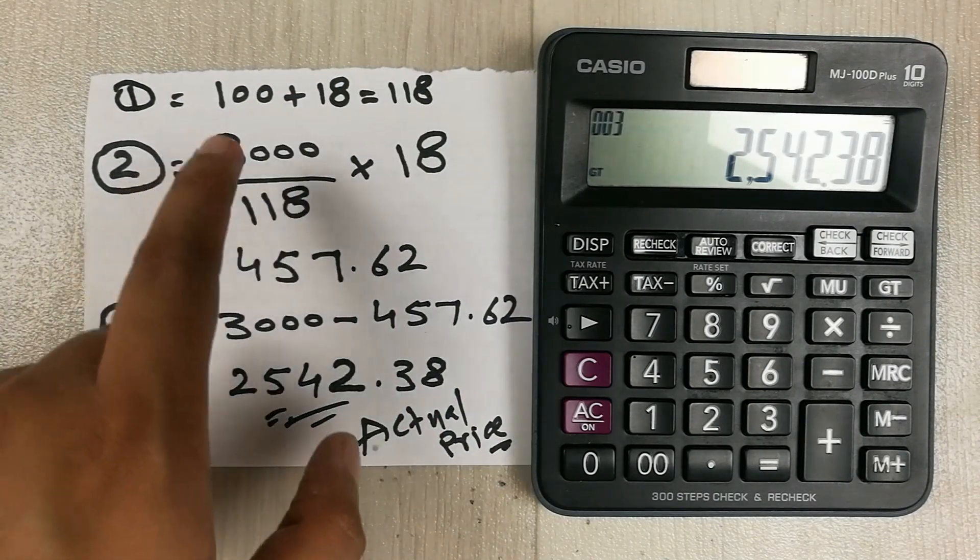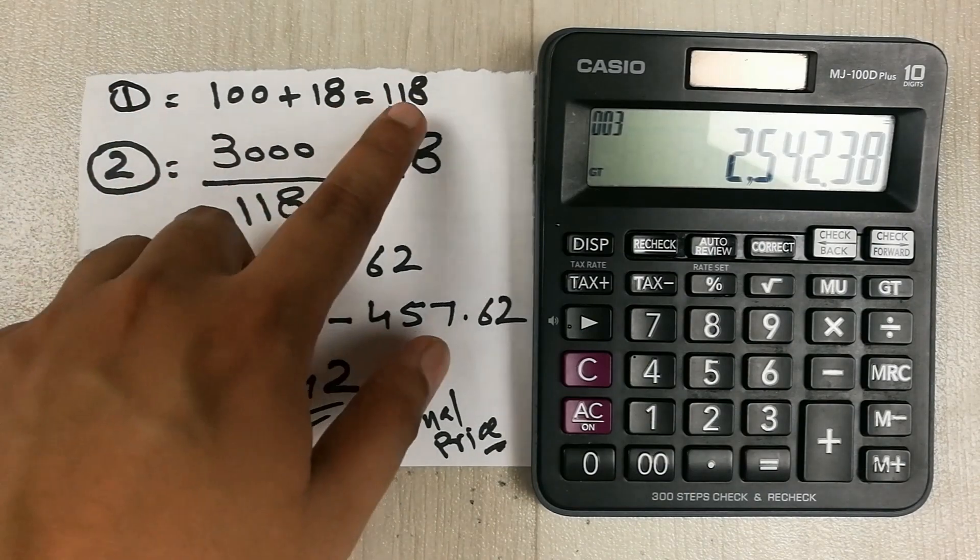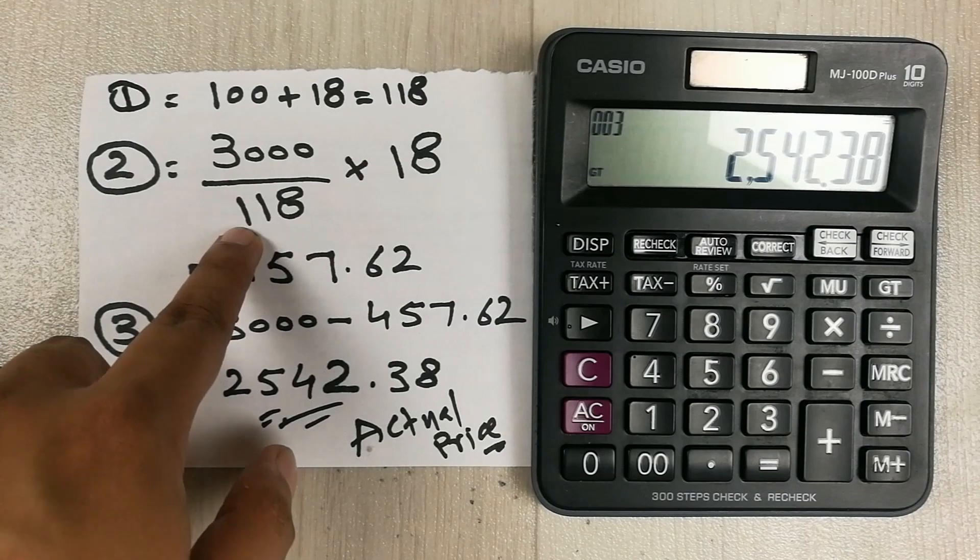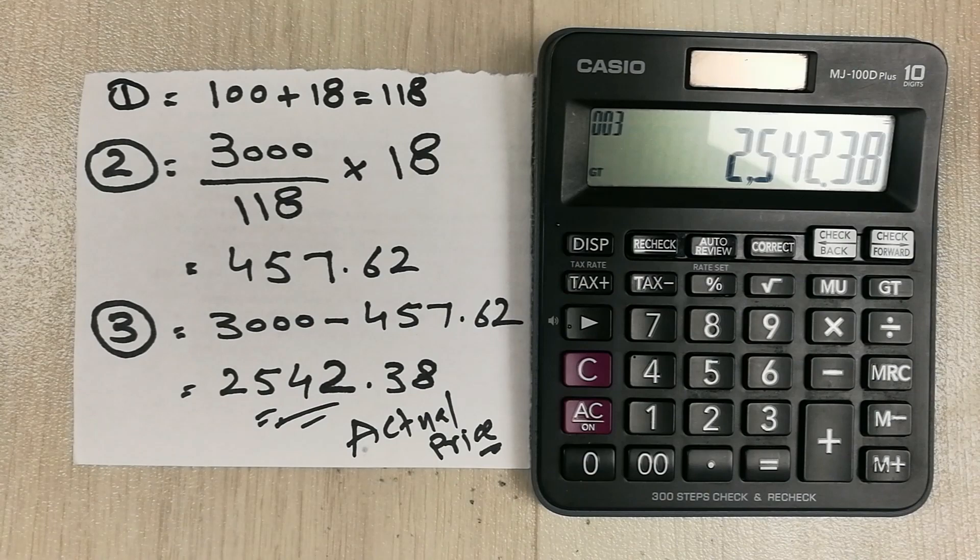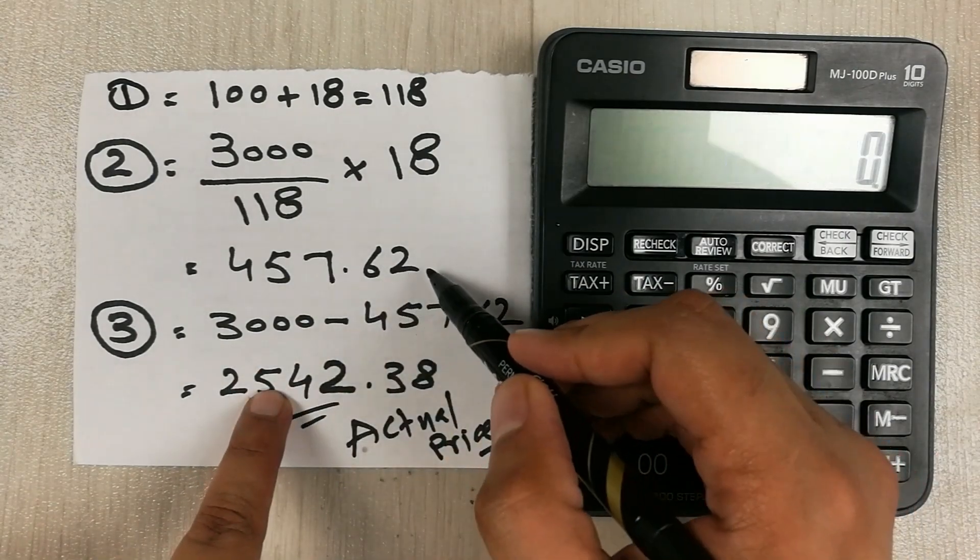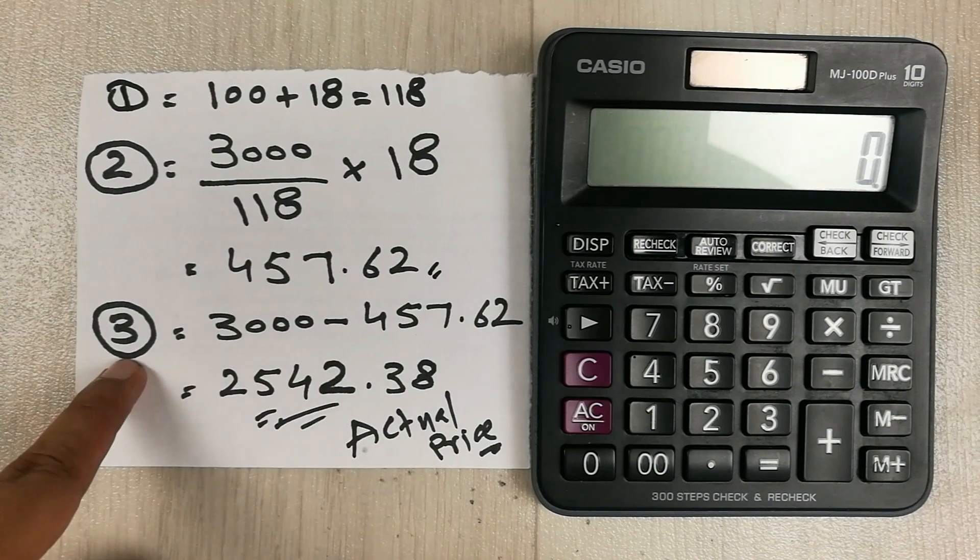Then our second step in which we divide the price which was 3000 with this 118, we write it here and we multiply it with 18. So our answer here comes 457.